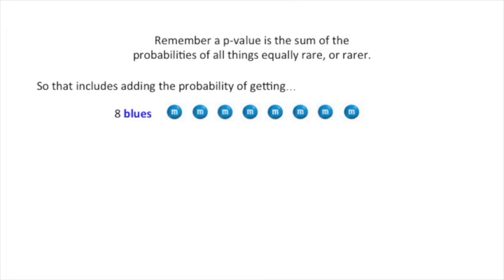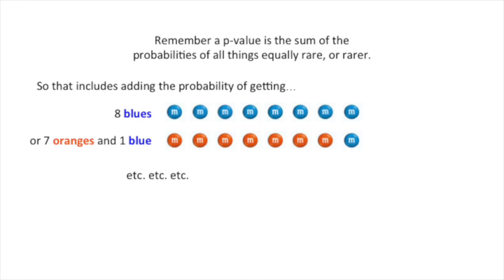So that includes adding the probability of getting eight blues in a row, or seven oranges and one blue, because that's equally rare. And actually, there are a lot of different ways you can come up with things that are equally rare, or rarer. Too many to put on this stat quickie, so we're just going to skip to the chase.